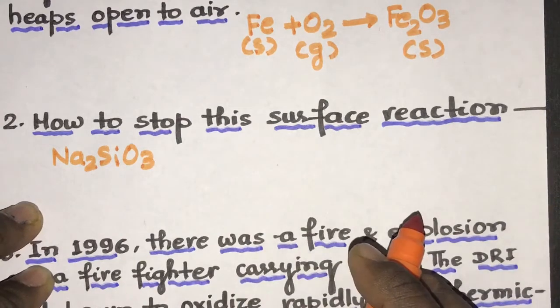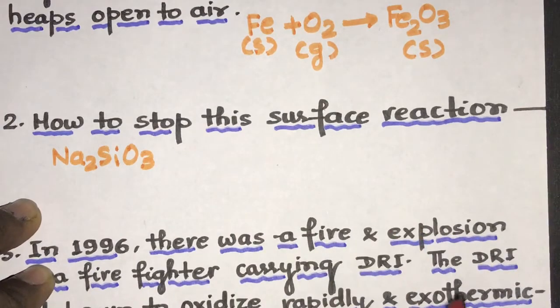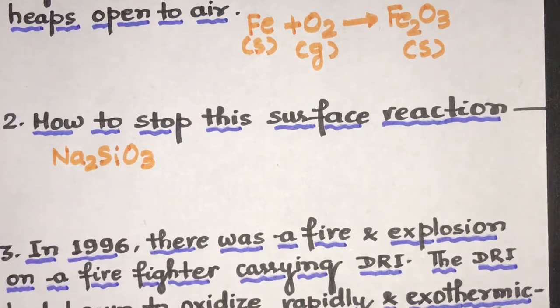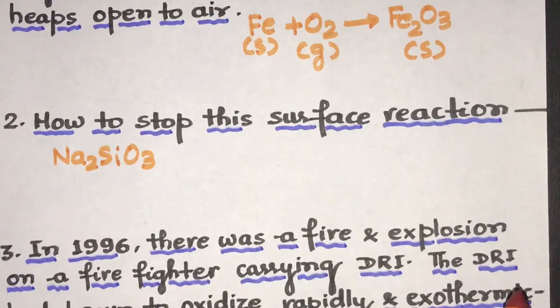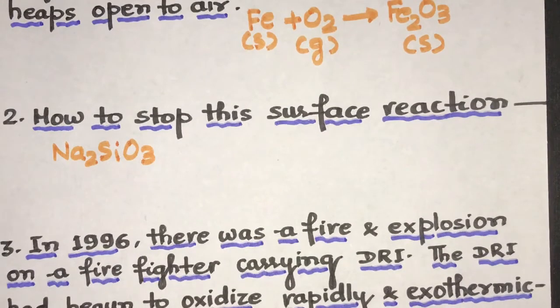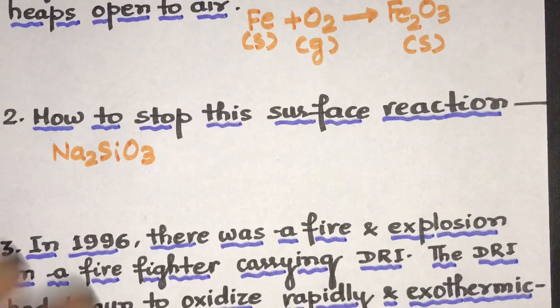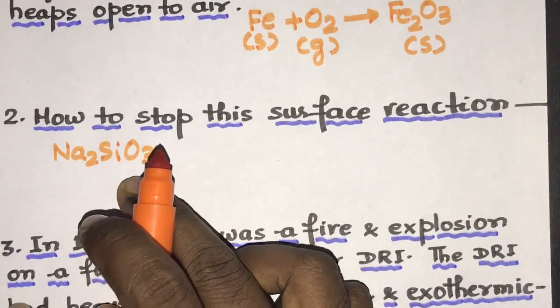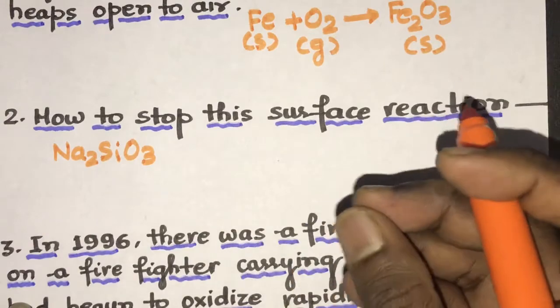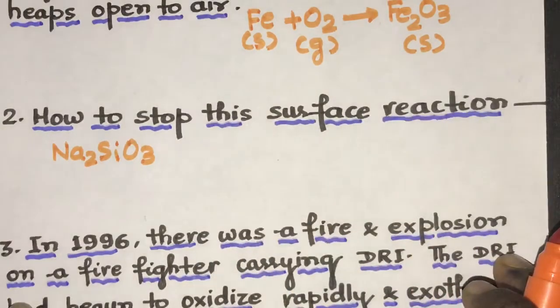This is the sodium silicate and this sodium silicate is very unreactive, so it forms a layer on the iron surface. It means that we just coat the direct reduced iron with sodium silicate. So it will stop the passage of oxygen or it will stop the contact of iron with oxygen and this oxidation reaction will not take place. So the layer of it will coat the iron that is DRI and prevent the oxidation of iron.